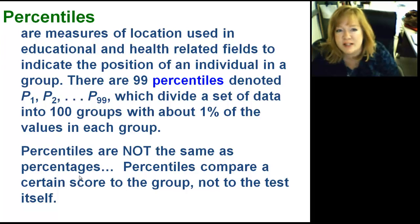If you get a 72% on a test, that's just the test, how many you got right. If you are in the 72nd percentile, that compares you to the individuals. For example, that means only 28% of the class is scoring higher than you. So it's a totally different concept.